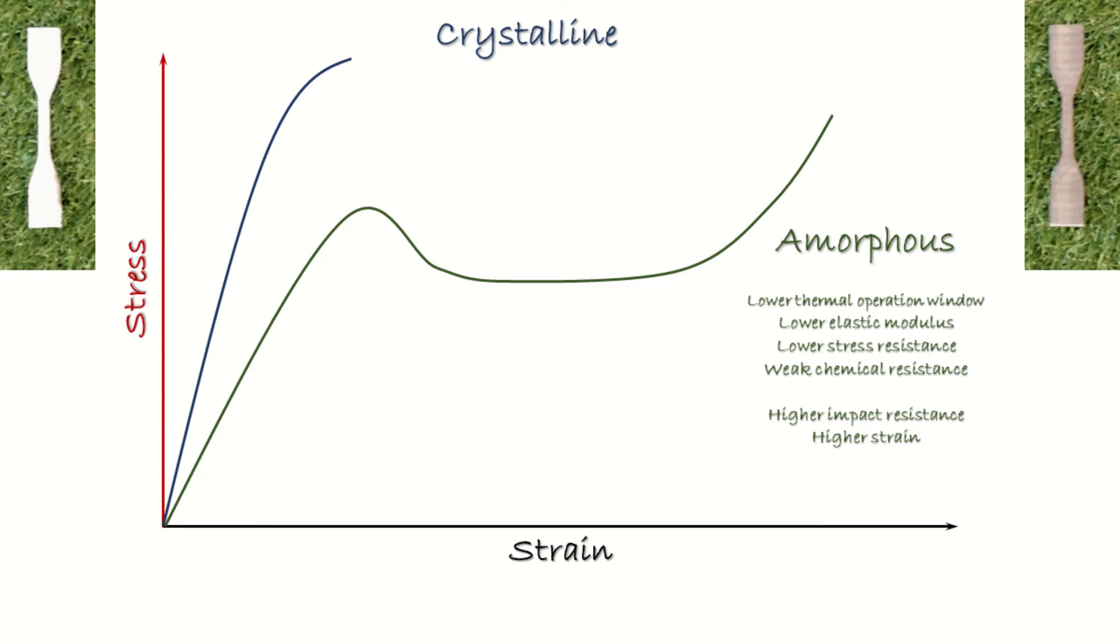The part printed with a phase rich in crystallites will have opposite characteristics, with wide thermal operating window, higher elastic modulus and stress. The resistance against acid, bases, and solvent will be provided by the crystallite phase. However, the resistance to deformation and impact will be lower and the sample will be more brittle.